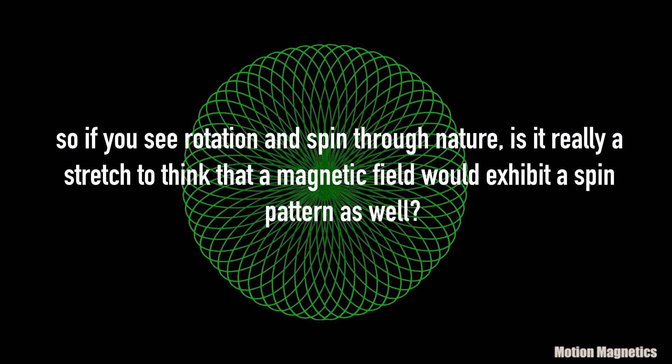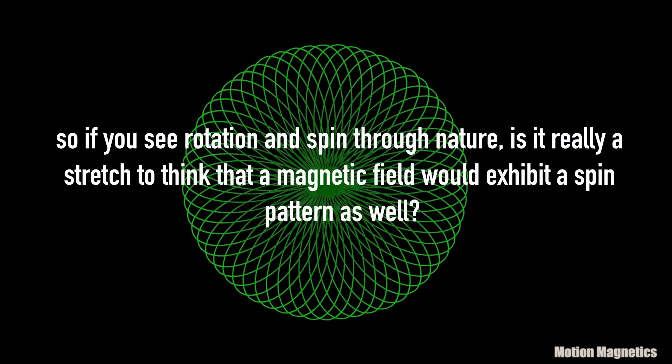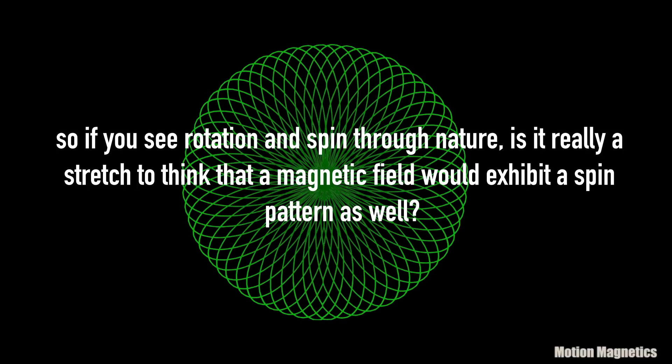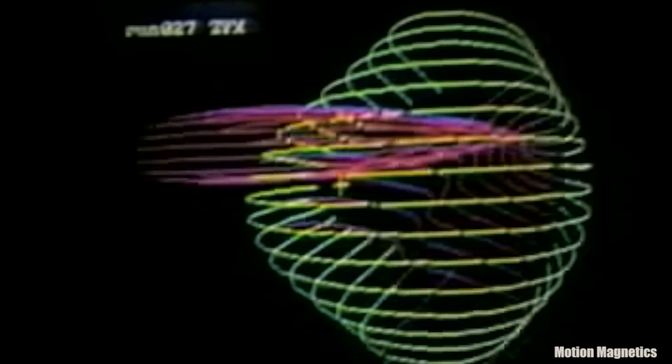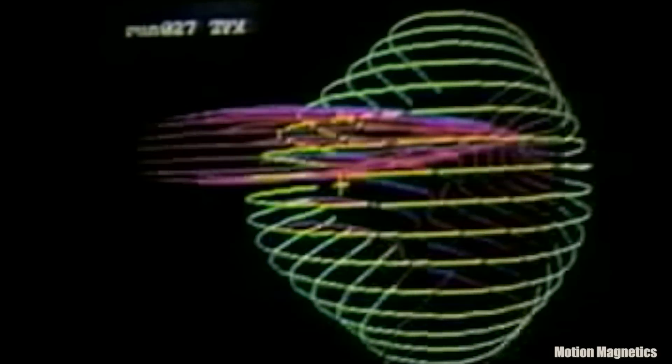So if you see rotation and spin through nature, is it really a stretch to think that a magnetic field would exhibit a spin pattern as well? Many people ask me what evidence there was of a spin vortex, so I'm going to provide more examples in this video. I'll cite some of my sources and attempt to demonstrate it more clearly.